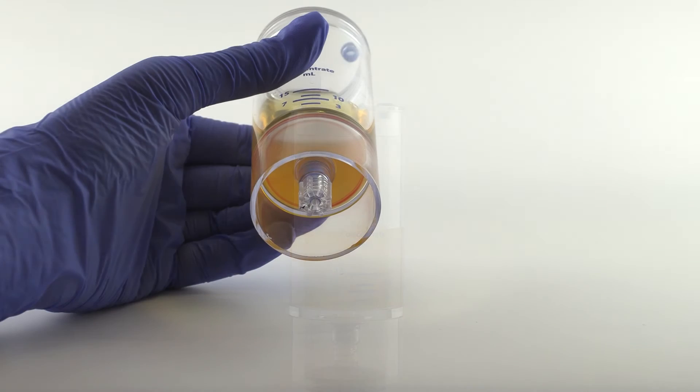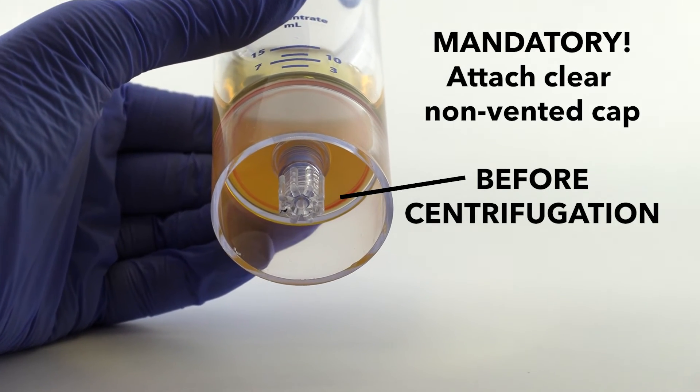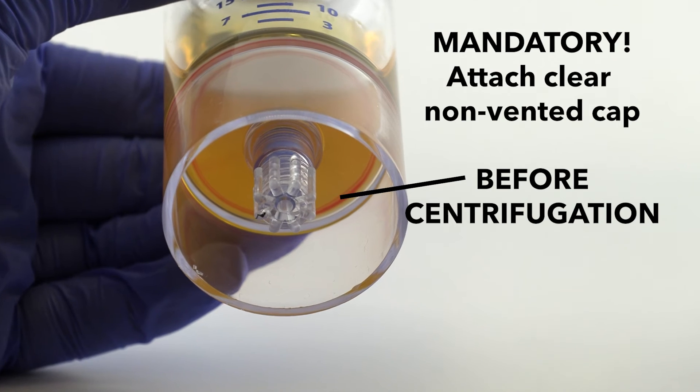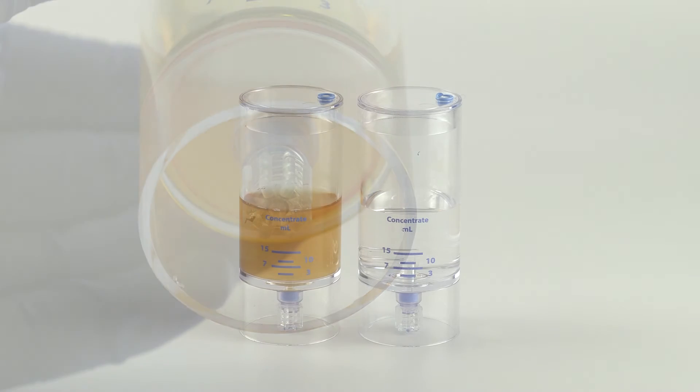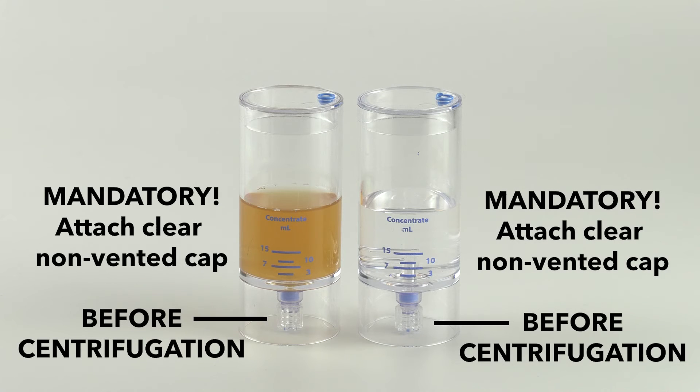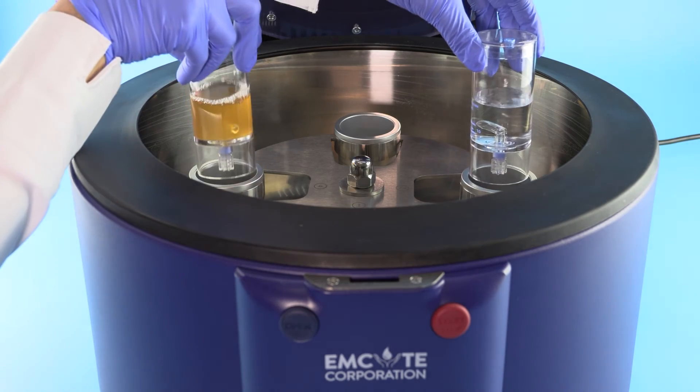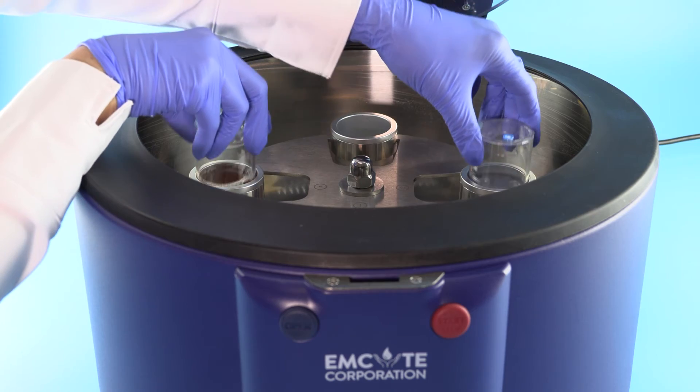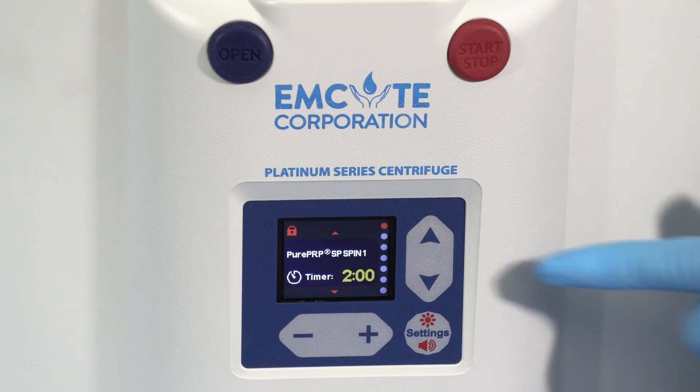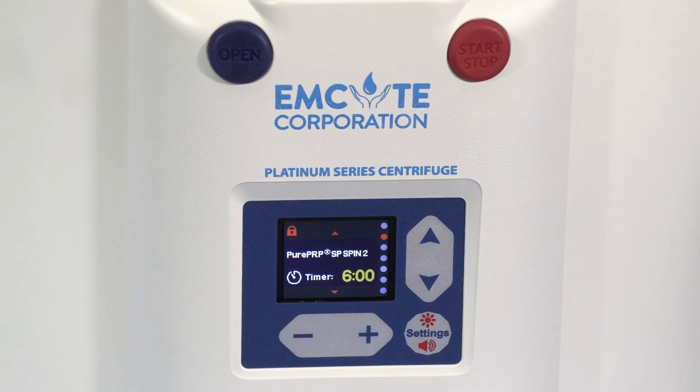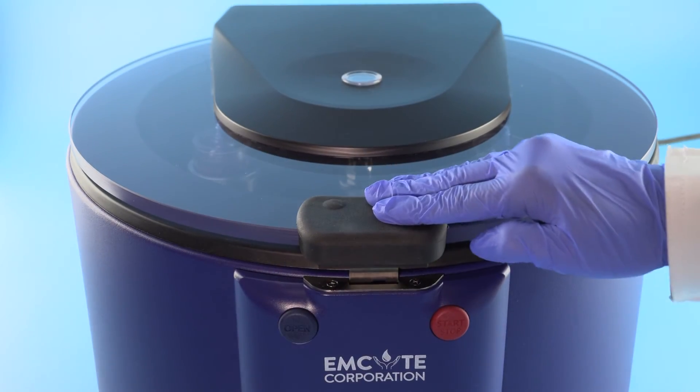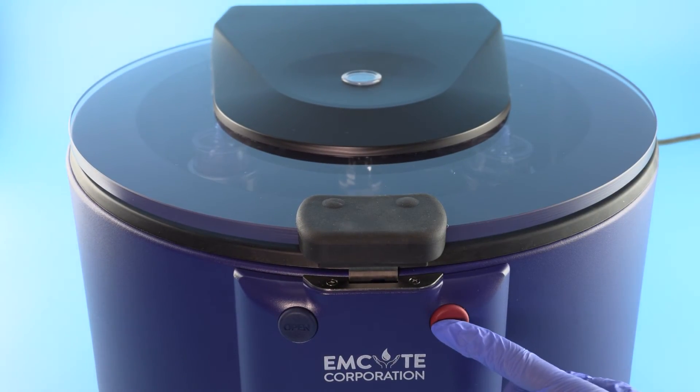As a mandatory step, always attach the clear non-vented cap to the bottom port prior to centrifugation. Counterbalance with equal volume. Be sure to always place the clear non-vented cap to the bottom port of the counterbalance device as well. Place back into the centrifuge rotor at opposite ends. Follow the protocol settings provided in the Pure2 IFU insert. Close the centrifuge lid and press start.